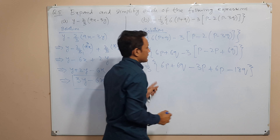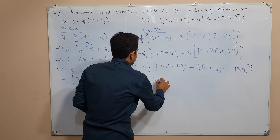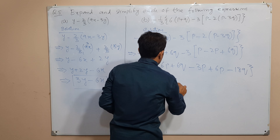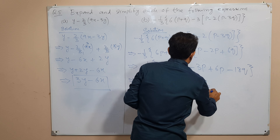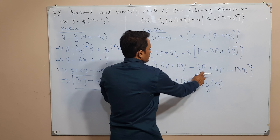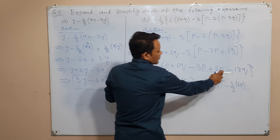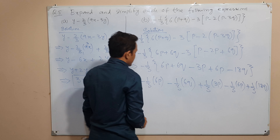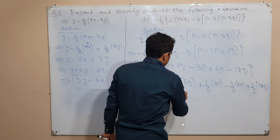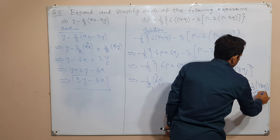तो ये अब हमारे पास सिर्फ curly bracket आएगा। अब हम हर term को negative 1 upon 3 से multiply कर देंगे। Negative 1 upon 3 into 6p, minus 1 upon 3 into 6q, plus 1 upon 3 into 3p, minus 1 upon 3 into 6p, और plus 1 upon 3 into 18q। 3 upon 3 cancel होते हैं तो simplify हो जाएगा।